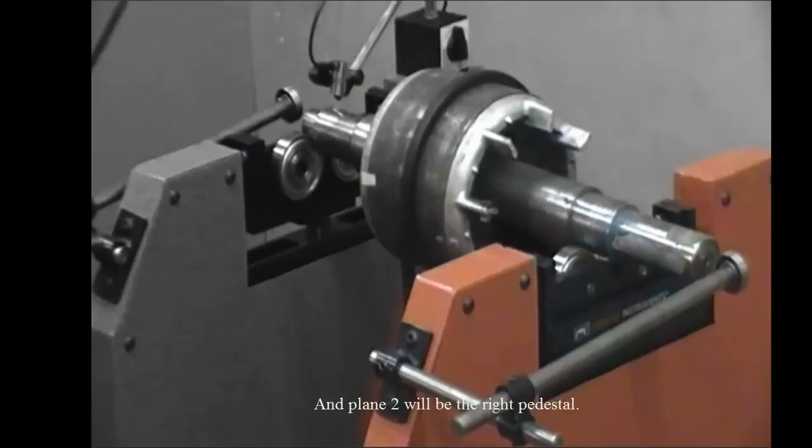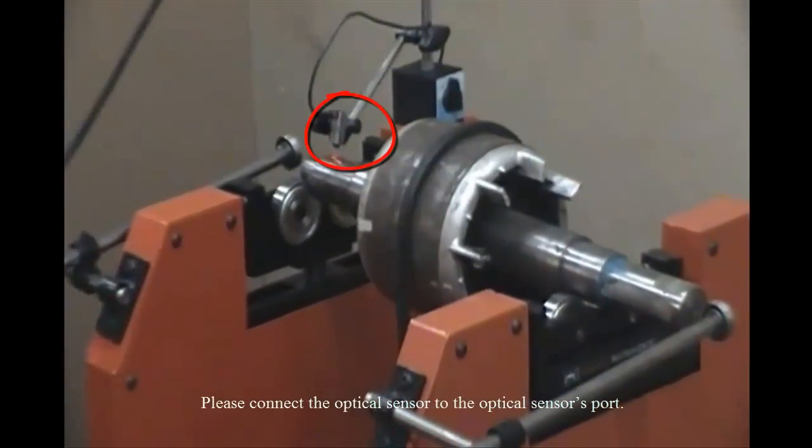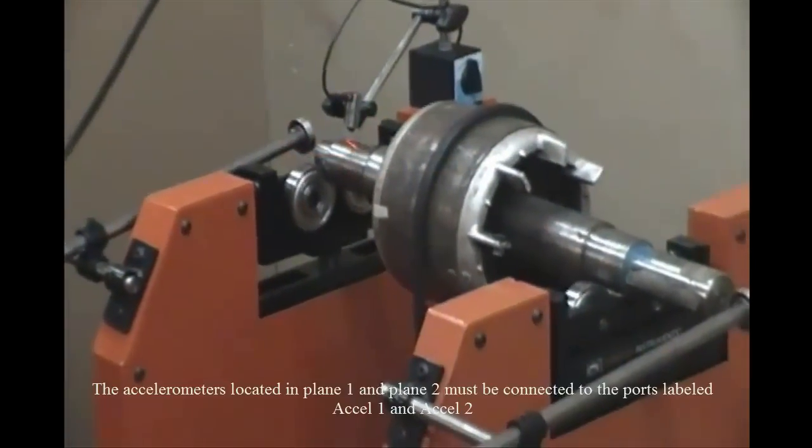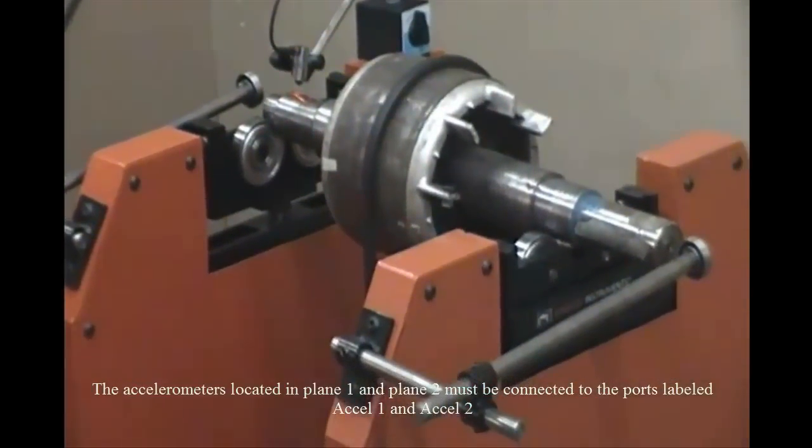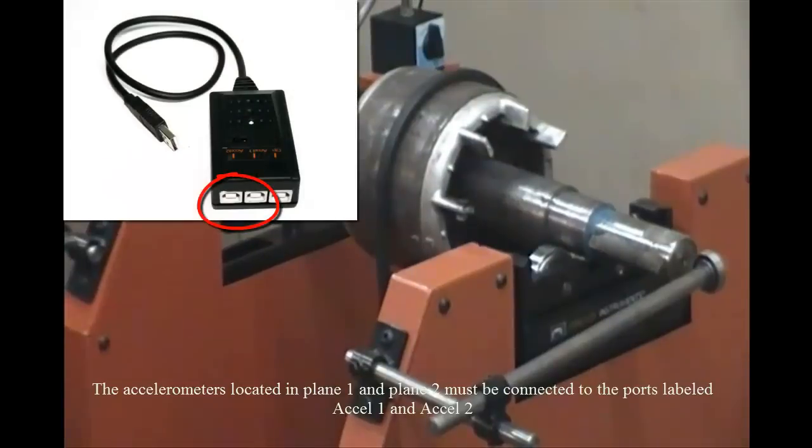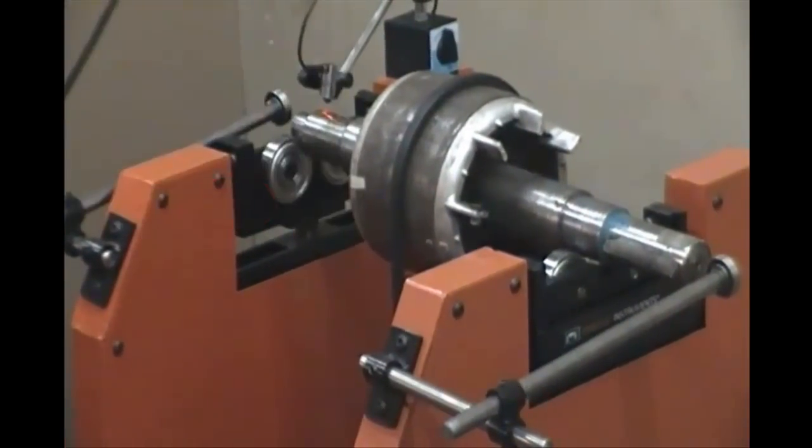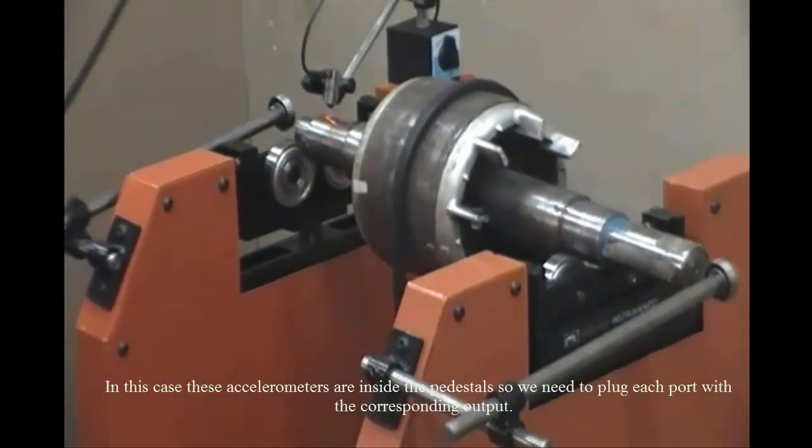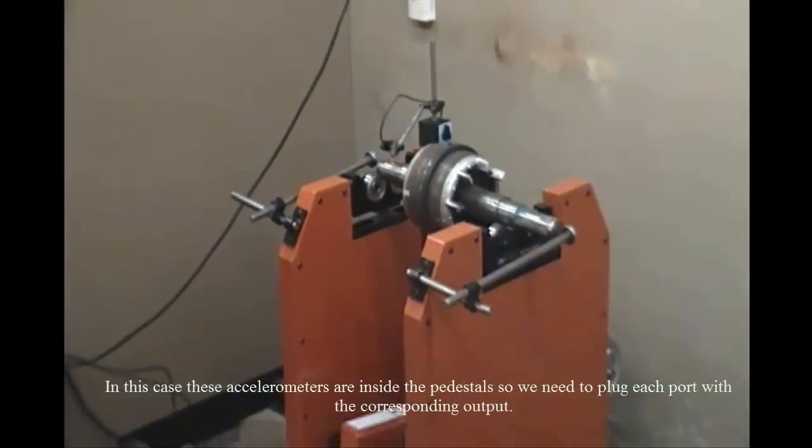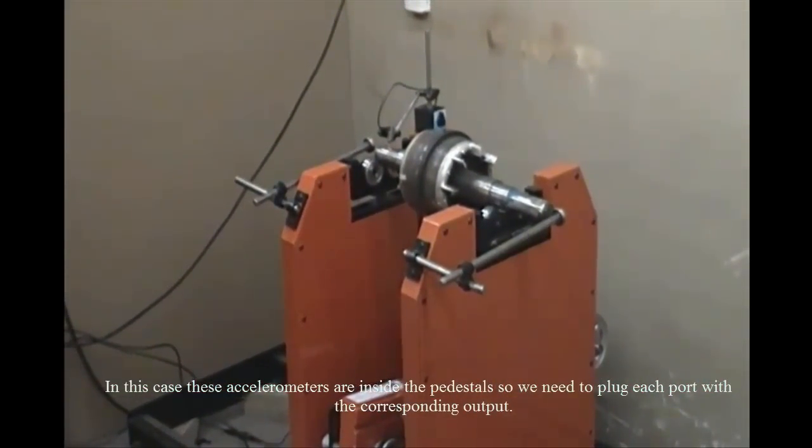and plane 2 will be the right pedestal. Please connect the optical sensor to the optical sensor's port. The accelerometers located in plane 1 and plane 2 must be connected to the ports labeled Excel 1 and Excel 2. In this case, these accelerometers are inside the pedestals, so we need to plug each port with the corresponding output.